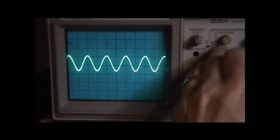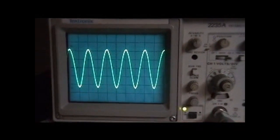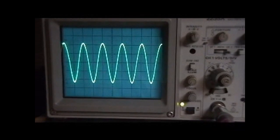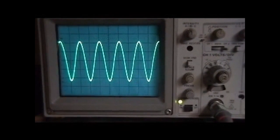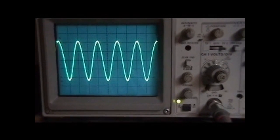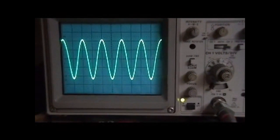And then if I switch it over to the second channel, what you'll see is each of the divisions here is about 1 volt. So you'll see I've got slightly more than 4 volts peak to peak on the output.